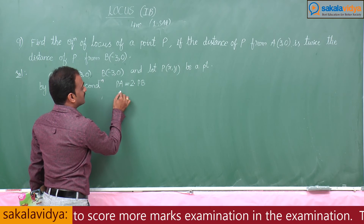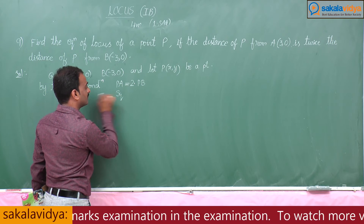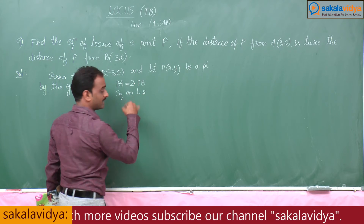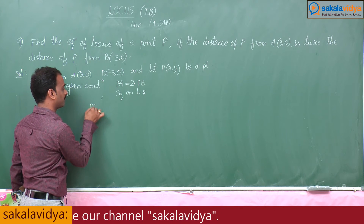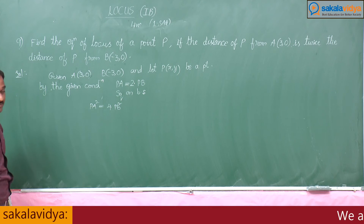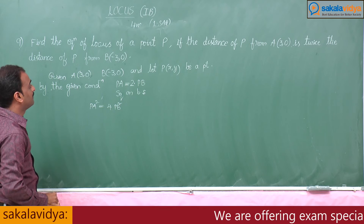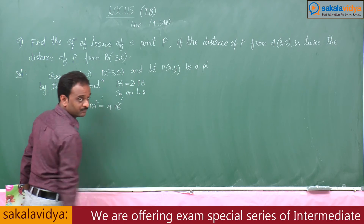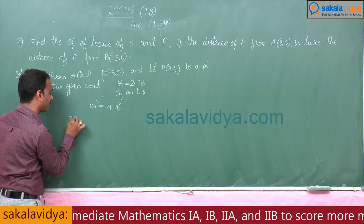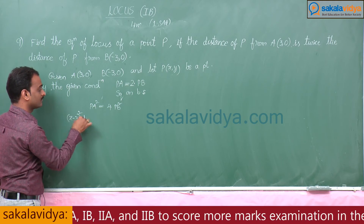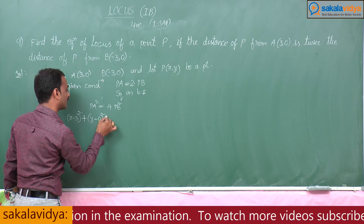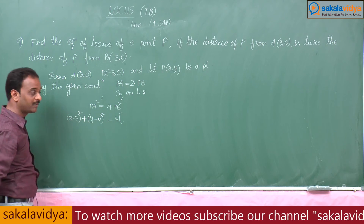To simplify this, squaring on both sides, PA² = 4·PB². The distance between P(x, y) and A(3, 0) gives us: (x − 3)² plus (y − 0)² equals 4 into PB².